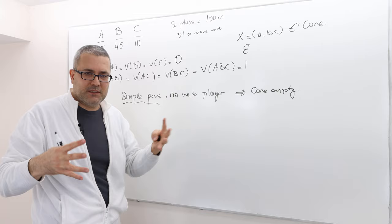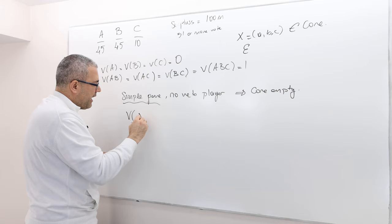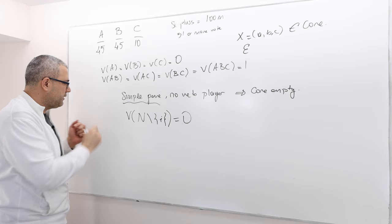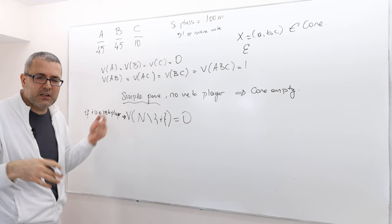So the, this is the formal definition. Player I is a veto player if V of N minus I is zero. All right. So if this is the case, if I is a veto player, then this is true. If this is true, then I is a veto player. Definitions are if and only if don't forget that.